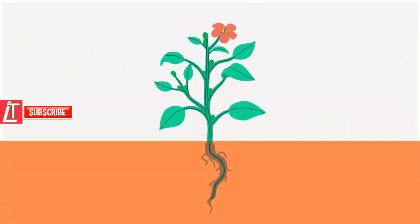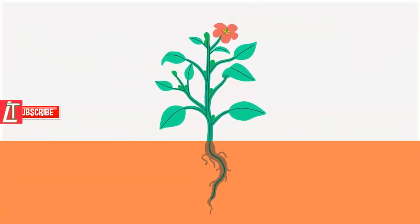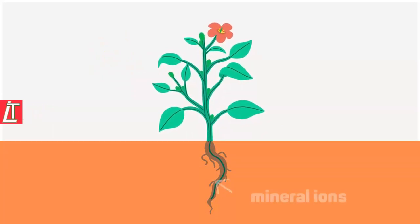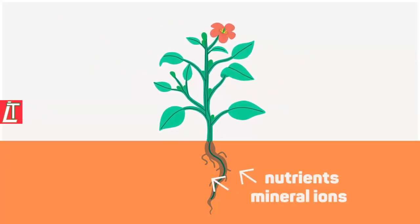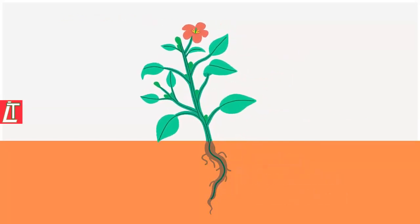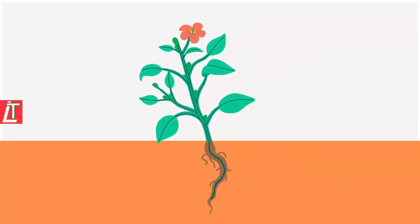Let's look at the general plant structure. Plants have a root system which serves to absorb mineral ions, nutrients and water from the soil. It is also there to anchor the plant down and stop it falling over.